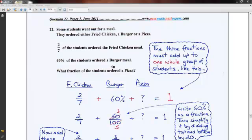Well, really this is a sort of fractions question because even though they've given you this as 60% of the students ordered a burger meal, 60% is really another type of fraction, isn't it? It's 60 over 100.